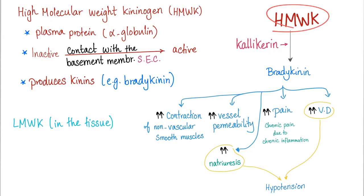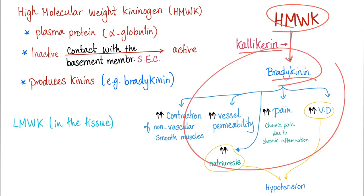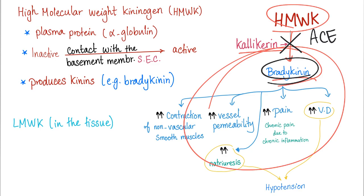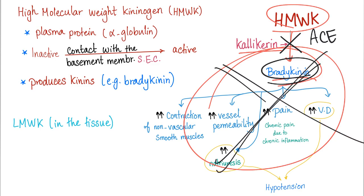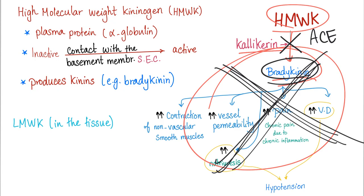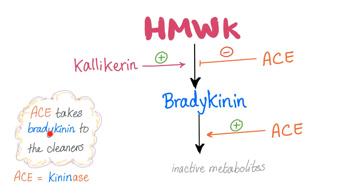High molecular weight kininogen is converted into bradykinin thanks to kallikrein. Bradykinin will cause all kinds of effects. But there is an enzyme called ACE — angiotensin-converting enzyme — that prevents bradykinin production, and even if bradykinin is formed, ACE degrades it into inactive, useless metabolites. So ACE takes bradykinin to the cleaners. That's why we call ACE a kininase.